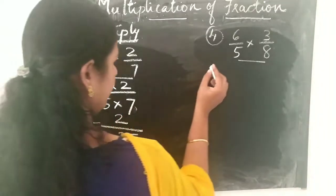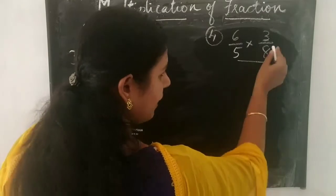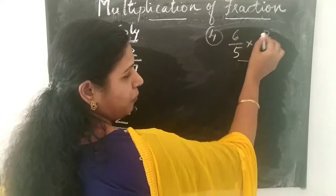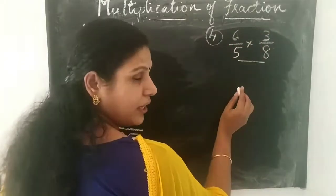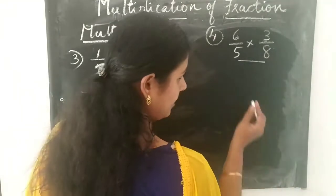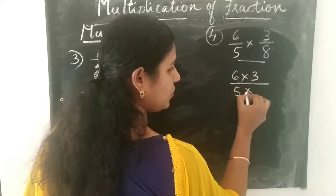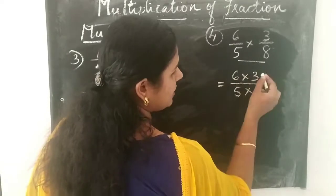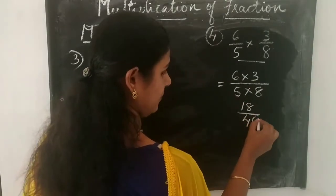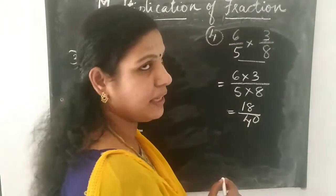The next is 6 by 5 into 3 by 8. We write the numerator divided by the denominator — first multiply the numerators, then multiply the denominators. That is 6 into 3 divided by 5 into 8. Now 6 threes are 18, and 5 eights are 40. So we get the answer as 18 by 40.